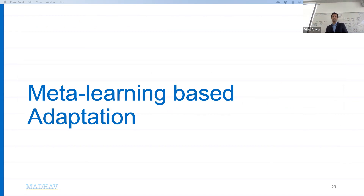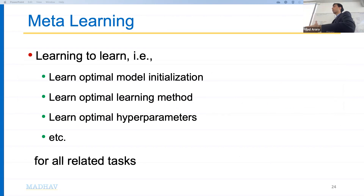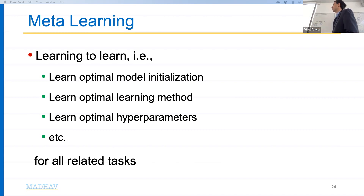Another possibility is meta-learning based adaptation. Meta-learning means learning to learn. It learns a good initialization, learning rate, or other hyperparameters that enable the model to learn any new task very quickly and efficiently.